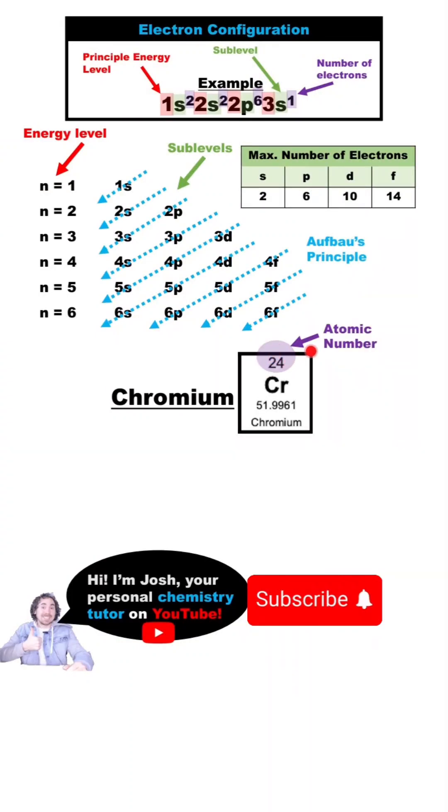Chromium has 24 electrons because its atomic number is 24. The first two are in the 1s sublevel. Since an s sublevel can hold a maximum of 2 electrons, we need to move to the next highest sublevel, the 2s, and the next 2 electrons go in that sublevel.